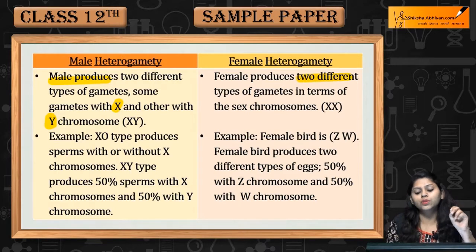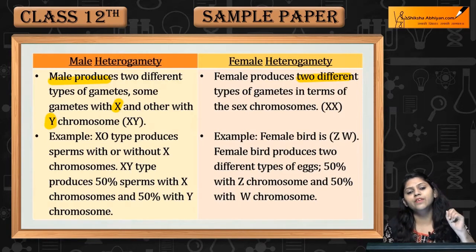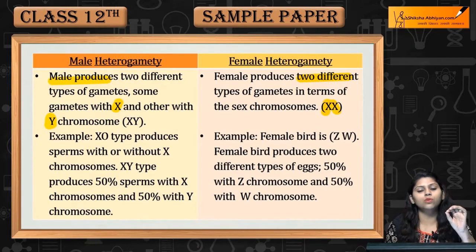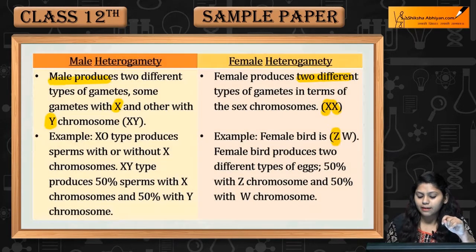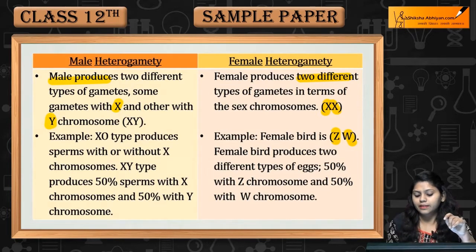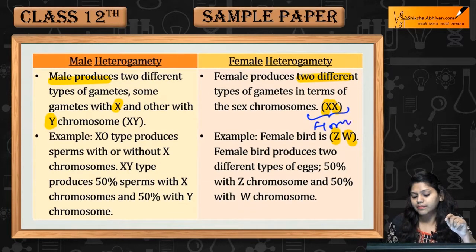If the female produces two different types of gametes, then we call it female heterogamety. But in the case of human females, it is XX, which is homogamety, not heterogamety. I must correct it — in the case of human females, this is homogamety.